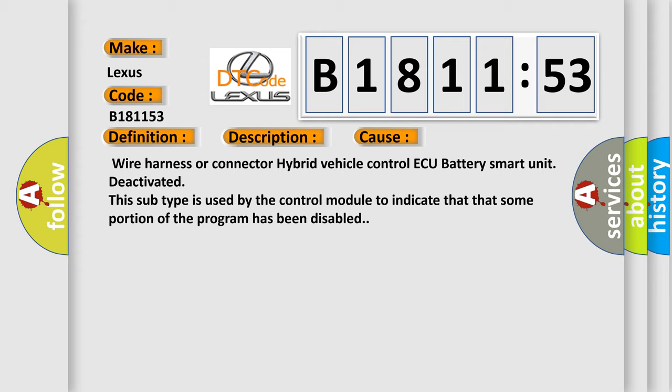Wire harness or connector hybrid vehicle control ECU battery smart unit deactivated. This subtype is used by the control module to indicate that some portion of the program has been disabled.